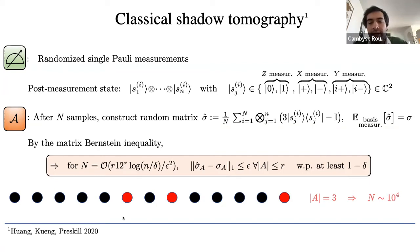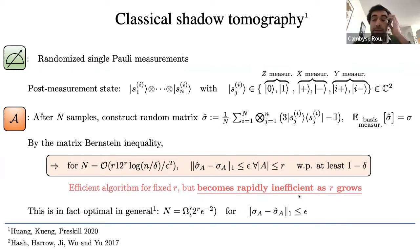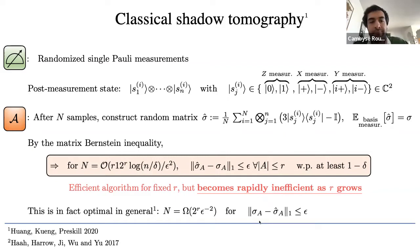As an example: if each dot is a qubit and you want to recover the state on just three red qubits, you need up to 10⁴ samples. In fact, this dependence on r and n is essentially tight up to polylogarithmic overhead, meaning you should not hope for a better strategy as long as the figure of merit is the trace distance and you have no further information about the state σ.